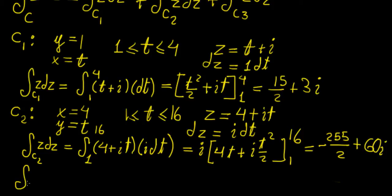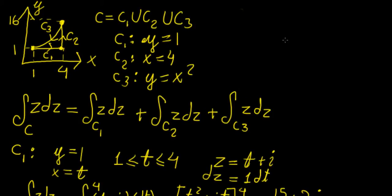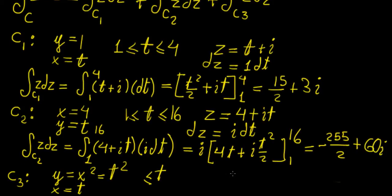For curve c3, defined by y equals x squared, x is the independent variable. Let x equal t so y becomes t squared. We need to be careful here because with line integrals the direction matters. The curve flows from 4 to 1, so the lower bound is 4 and the upper bound is 1.